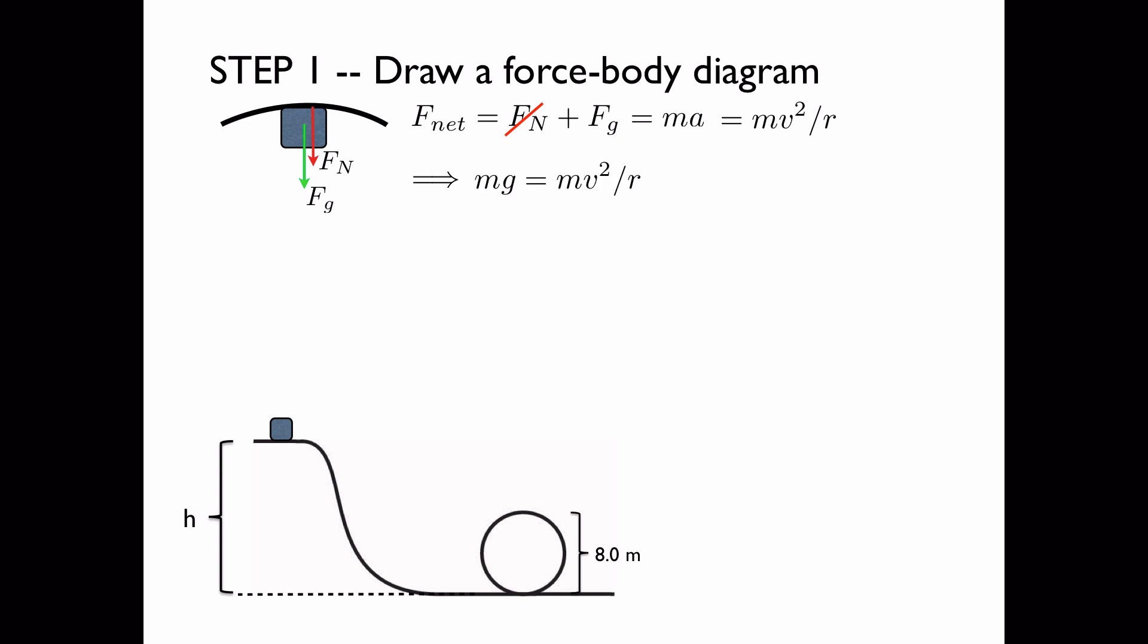Drawing from that line of equations, we see that mg, which is the force of gravity, has to be equal to mv squared over r. If we cancel out the masses, we find that g is equal to v squared over r when the block is going the minimum velocity that it can and still maintain contact with the loop at the top of its path.